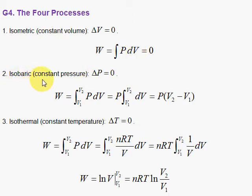The next process is the isobaric process, one at constant pressure. In a weather map, an isobar is a line that has constant pressure points.